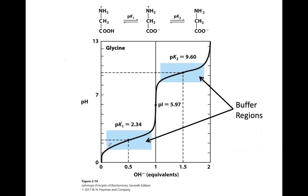In the pH range between about 1 and 3, you can add almost one equivalent of base and the pH changes very little — it's buffering. The same is true in the region around pH 9.6. So you can use glycine as a buffer for either of these two pH ranges.